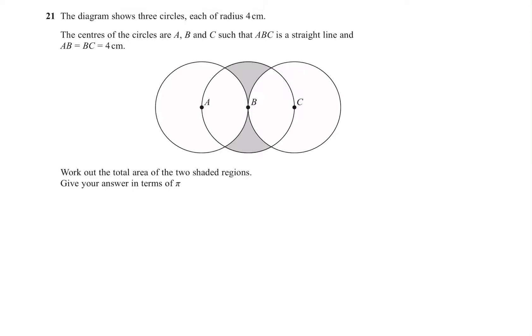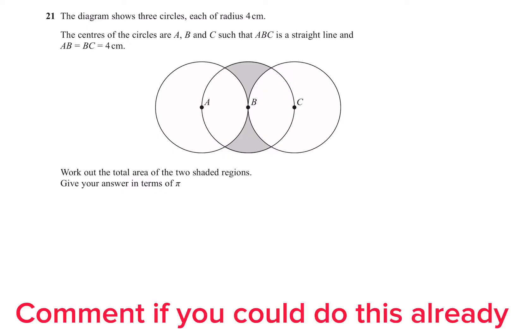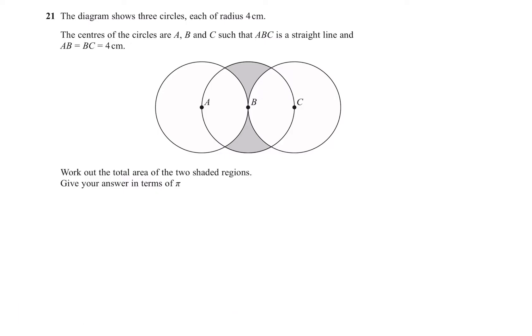We all know GCSE maths questions can be very difficult. However, this one is possibly the most difficult one that has ever been set. It is asking you to find the shaded region between three circles. When you look at the information, how little you're given, you might just look at it and have no idea what to do.